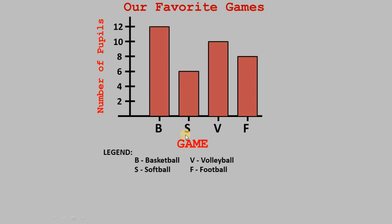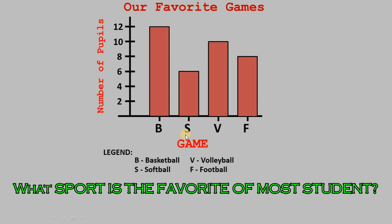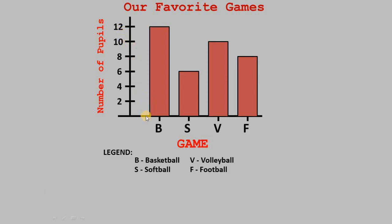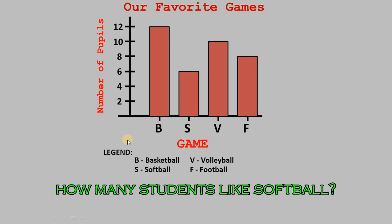The next question: what sport is the favorite of most students? According to the bar graph, the sport most students play is basketball, because it has 12 pupils. Next question: how many students like softball? Based on the bar graph, the number of pupils who like softball is 6.